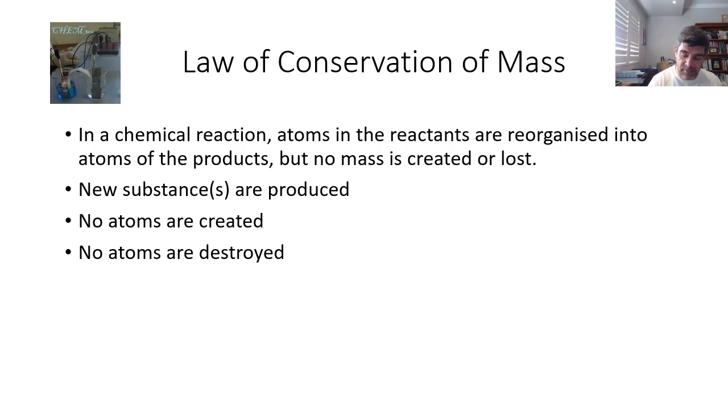We can check this by ensuring that first, new substances are produced—that is the definition of a chemical reaction. Second, no atoms are actually created. This is different to nuclear reactions where radioactive particles can change the nature of the atom. In chemical reactions that doesn't happen. We have the same atoms at the beginning in the reactants as we do at the end in the products, but they may be rearranged. So no atoms created gets a tick, and no atoms destroyed gets a tick.